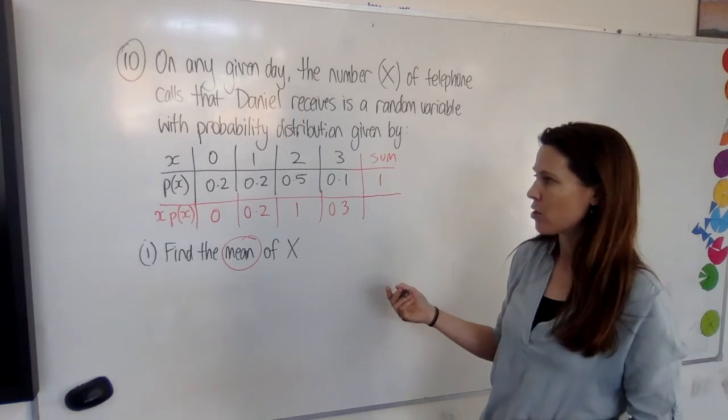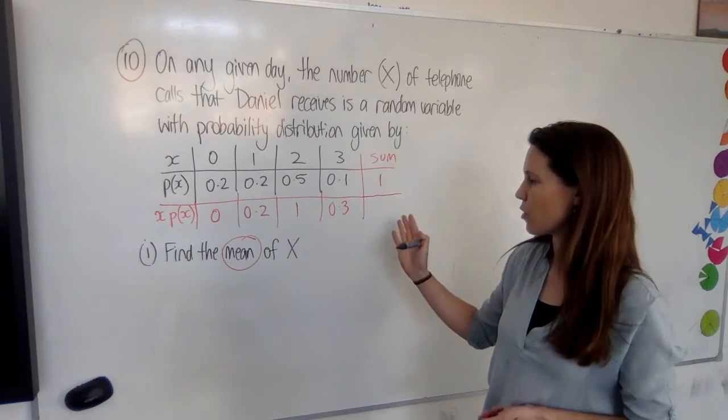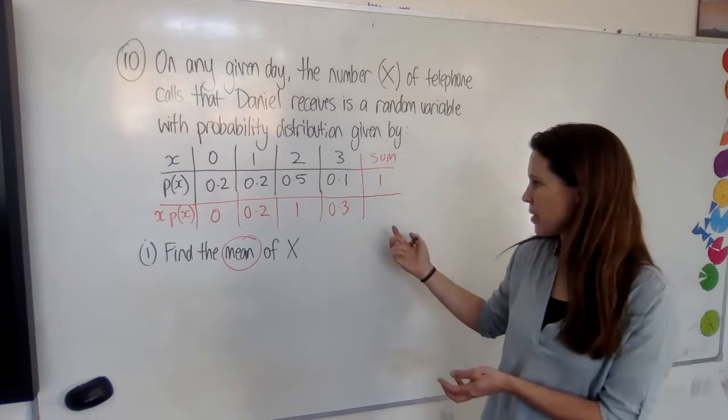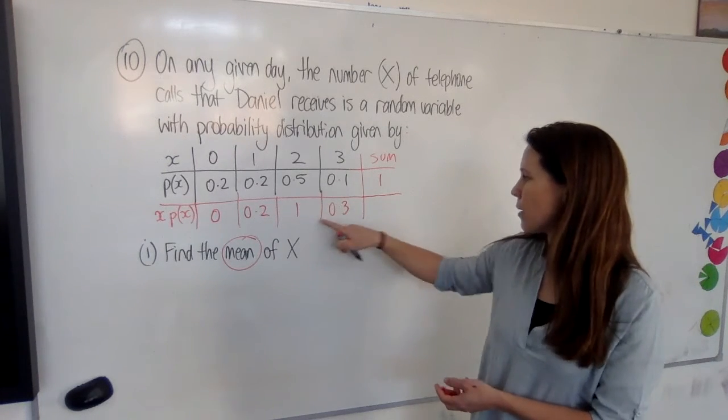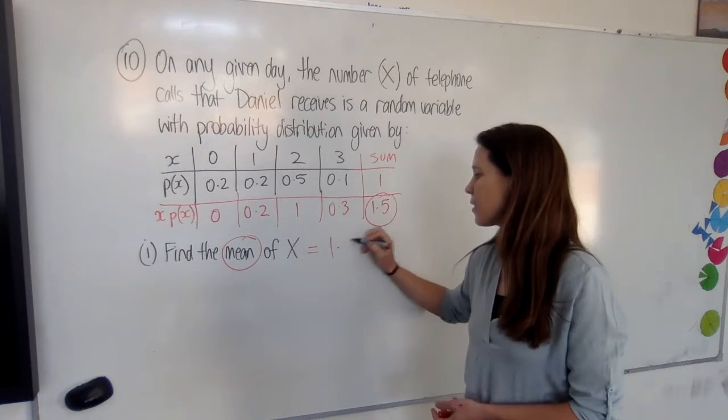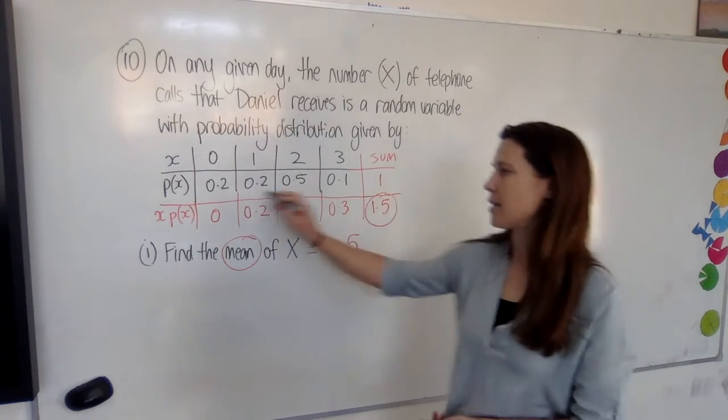Now, this is a two-mark question, so clearly they want to see if you can work it out the correct way by making this extra row and then adding things up. 0.2 plus 1 plus 0.3, that gives me 1.5. So that's the answer. And the working that they want to see is this.